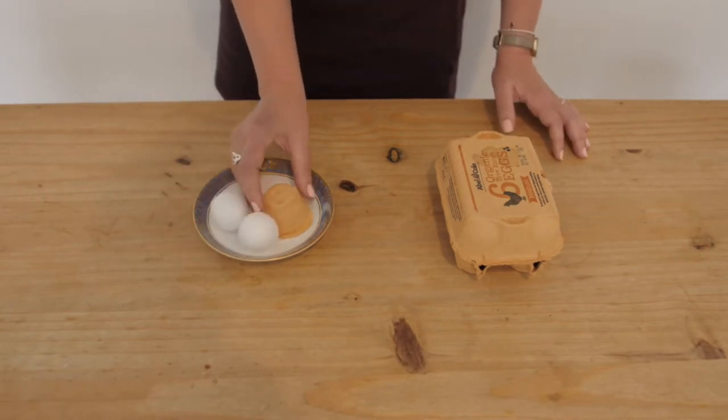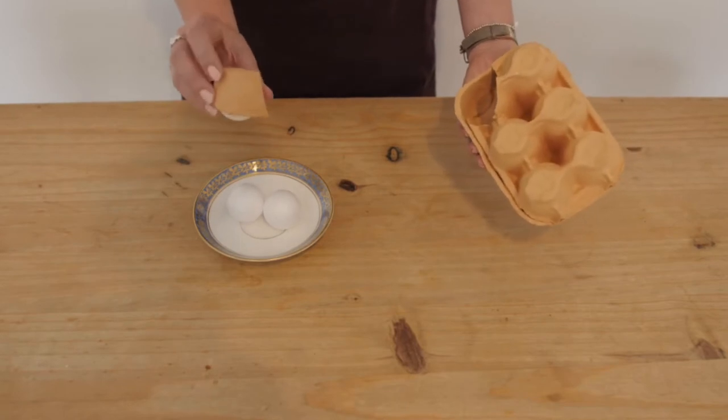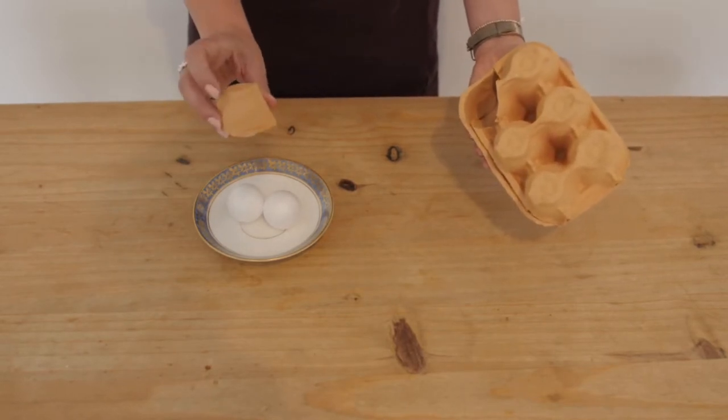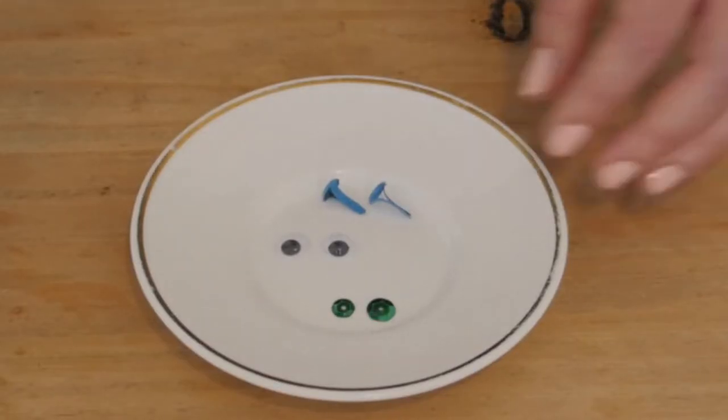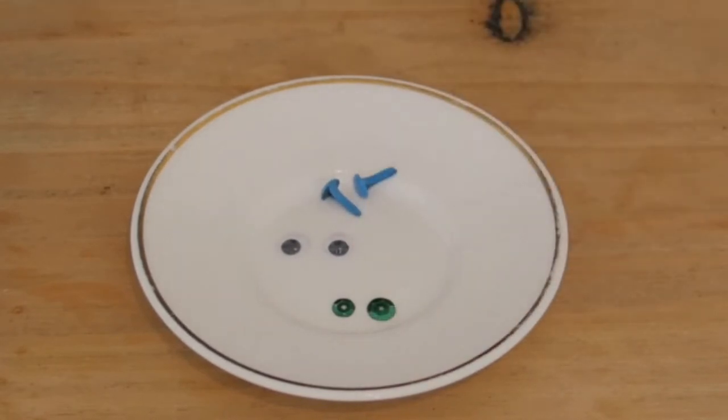You could also use an egg box. I have just cut out the bottom and this will give you a nice rounded face. Here are some options for some eyes: we have split pins, googly eyes, sequins. You could also use buttons or a marker.